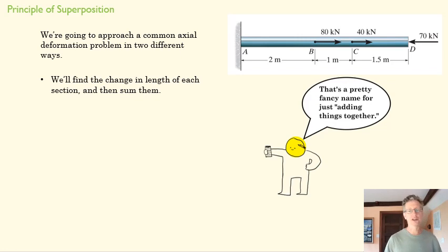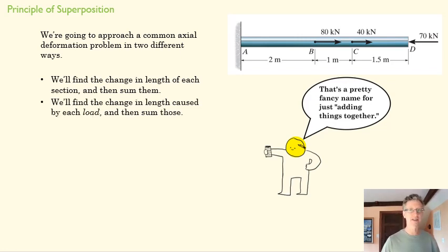And it is just a fancy way of saying that we're going to add things together. But that's interesting. It's interesting that what we're going to find is that we can either separate this into three areas, three sections, and find the internal resultant load in each one of those and use the equation. Or, and this is really what superposition means, we can just treat this bar. We can figure out what's the deformation caused by this guy while we ignore the 40 and the 70. Then we can figure out what the deformation is that's caused by the 40, and we can ignore the 80 and the 70.